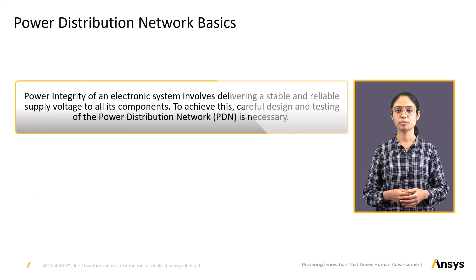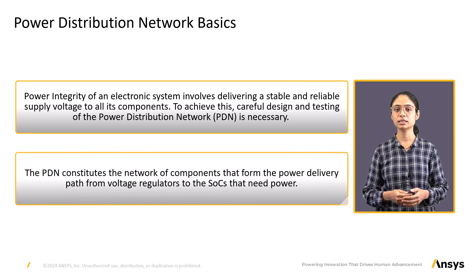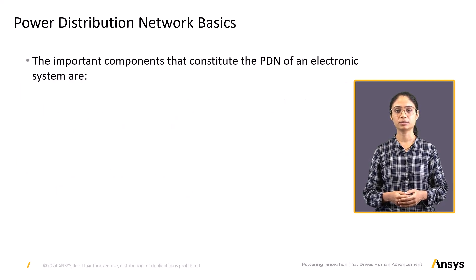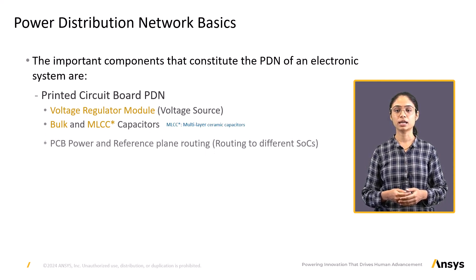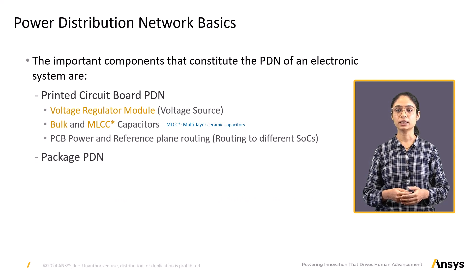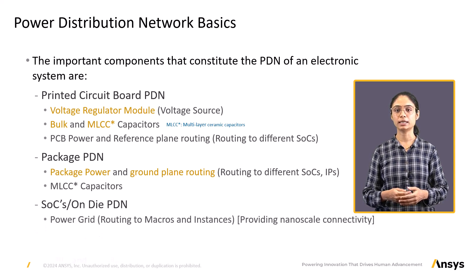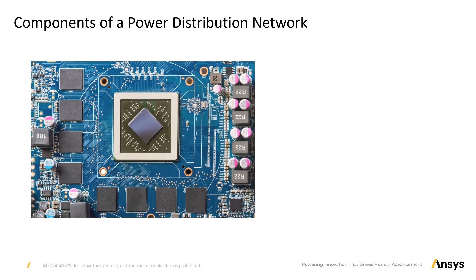Power distribution network basics: power integrity of an electronic system involves delivering a stable and reliable supply voltage to all its components. To achieve this, careful design and testing of the power distribution network is necessary. The PDN constitutes the network of components that form the power delivery path from voltage regulators to SoCs that need power. The key components of an electronic system's PDN are: the printed circuit board PDN, which consists of the voltage regulator module (the voltage source), bulk and MLCC capacitors, PCB power and ground plane routing; the package PDN, including package power and ground plane routing and MLCC capacitors; and the SoC or on-die PDN, which consists of the power grid, MIM and die caps, and the current sinks.